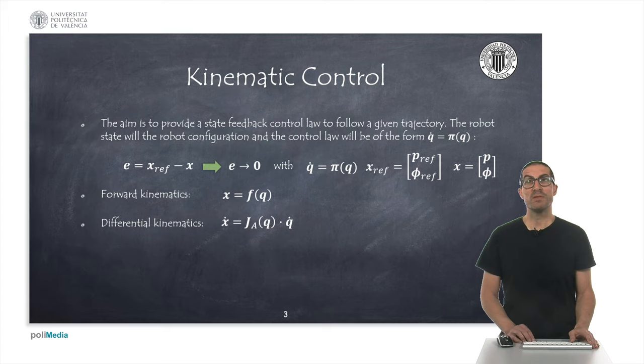The path is defined with the three Cartesian position coordinates p and three orientations, here defined with the vector of Euler angles phi. The kinematic controller will use the forward kinematics to compute the end effector position, but it will also use its linearized model using the robot's Jacobian.